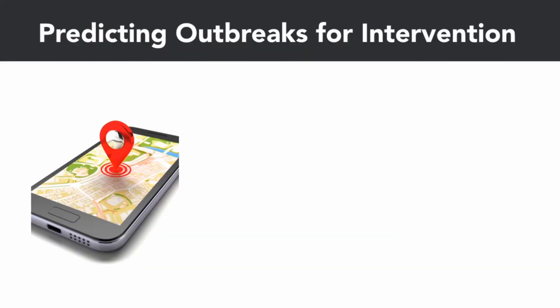Data science is also able to help predict outbreaks of diseases, which allows you to plan an intervention. One interesting project has been looking at GPS data from phones, which has permitted researchers to track the geographical movement of people diagnosed with Ebola. They were able to see where these known carriers were moving, allowing them to design interventions to contain the risk — either by encouraging people not to move or by preparing new locations to deal with someone carrying the disease.